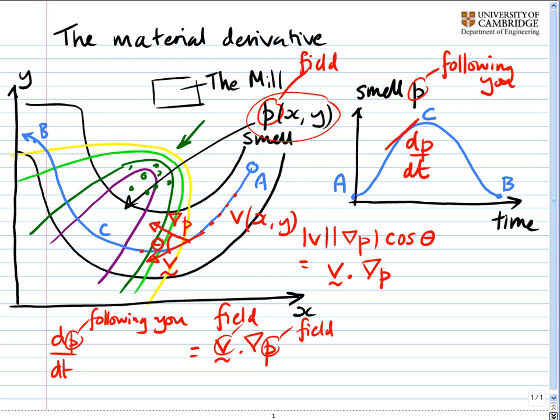Now, as a further point, if the wind was changing, say, and the smell field was changing with time, we need to add on here, at the point that we're sitting at here, we need to add on the change in the smell with the change in time at that point, so with x and y constant. And that's to give us the complete expression.